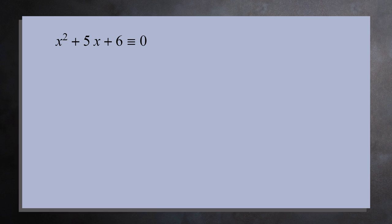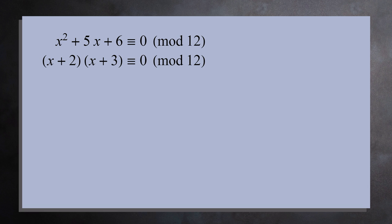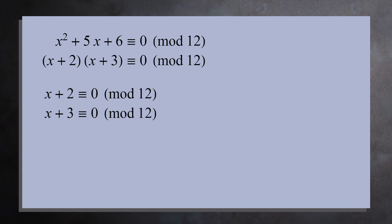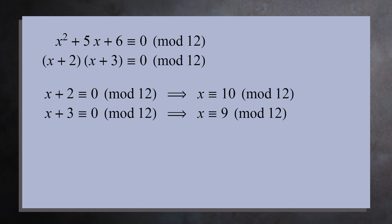Let's see an example where this technique of solving equations does not work. We'll solve the equation x squared plus 5x plus 6 equals 0 in the integers mod 12. If you factor the left-hand side, you get x plus 2 times x plus 3 is congruent to 0 mod 12. Setting each term to 0 mod 12, you get x equals 10 or x equals 9.